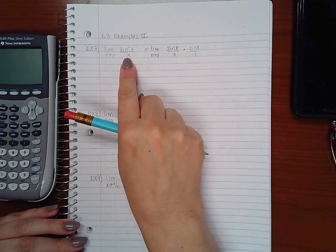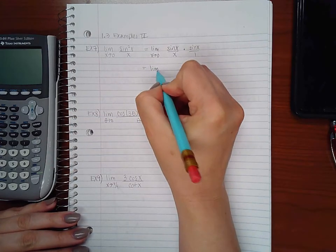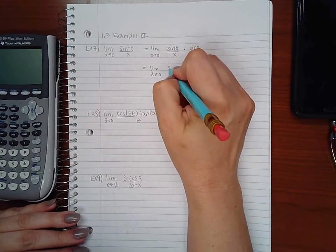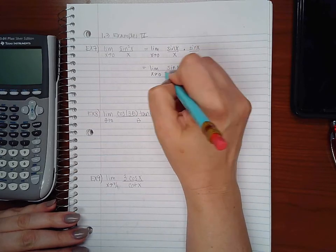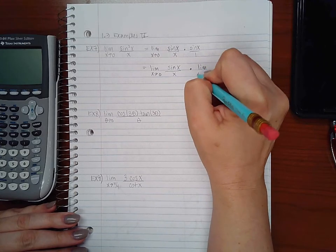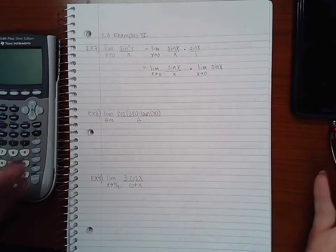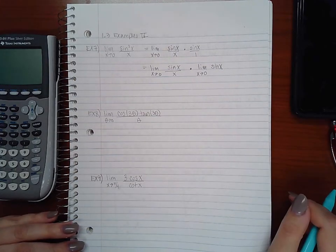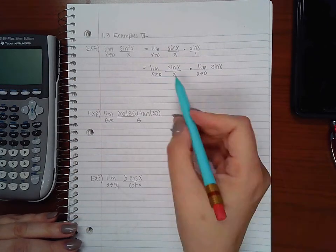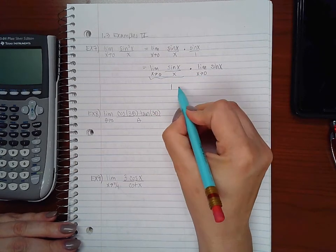Then I can apply one of my properties that says I can separate that into the sine of x over x times the limit of just sine of x over 1 or sine of x. Then I can apply that special theorem.